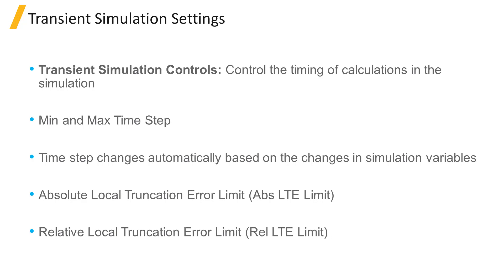Transient simulation controls determine the time step used in the simulation. The minimum time step defines the smallest time step that will be used in the transient simulation and is always the initial time step used by the solver at the start of simulation.